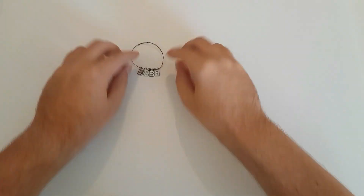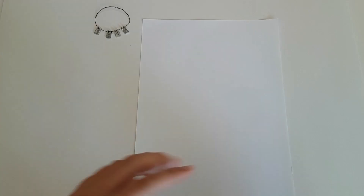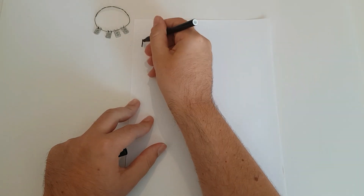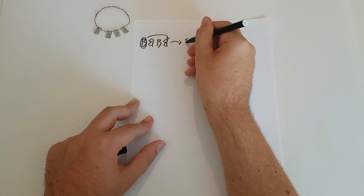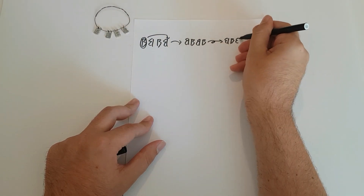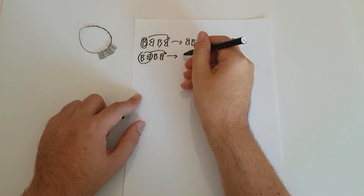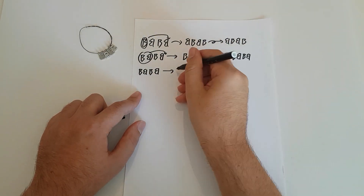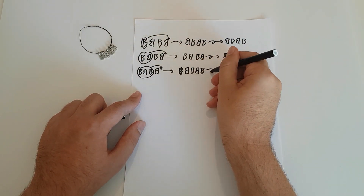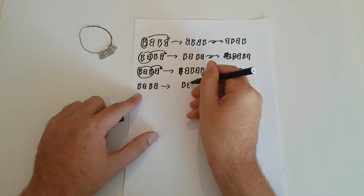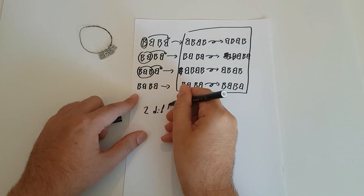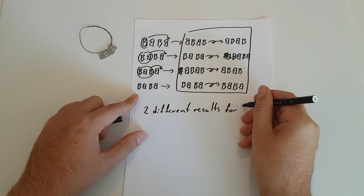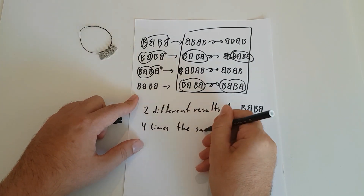And then we have this letter combination with two B's and two reverse B's. We fill in the manipulation table the same way: move one letter and reflect, move two letters and reflect, move three letters and reflect, do nothing and reflect. There are now only two different letter combinations in the box, and the initial letter combination appears four times.